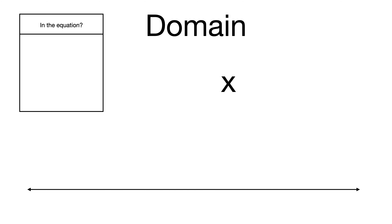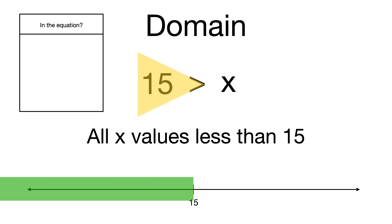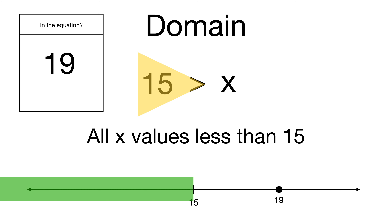Let's try one more example of domain. In this one we have x is less than 15. The inequality opens up towards 15, so the domain is all x values less than 15, going all the way to negative infinity. Let's check 19 on the number line — it's just outside, so no, 19 is not included in this domain.